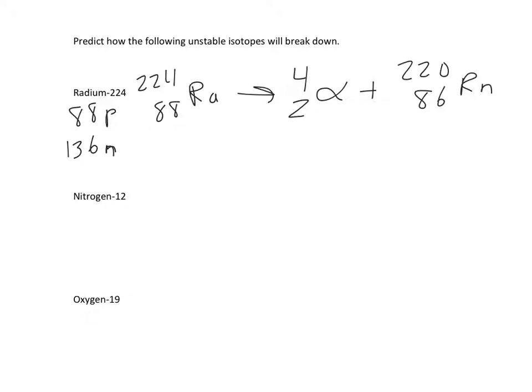And so that's the most likely method it's going to break down. Now not every atom that is over 82 breaks down through alpha decay, some do beta. And that's really hard to predict, but we're going to assume most of the ones over 82 will do alpha decay.